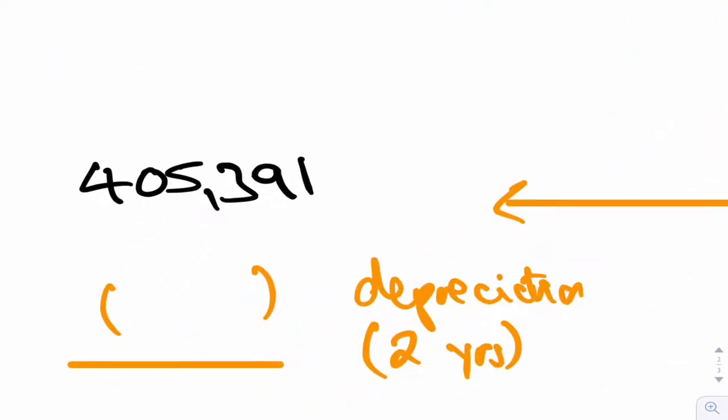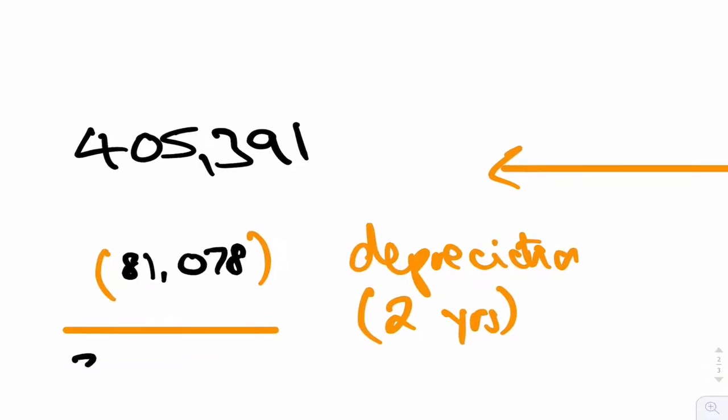Now, this right-to-use asset then, let's depreciate it for a couple of years. So divide by 10 times by 2, then you'd get 81,078. And that would give you 324,313 net book value after two years.